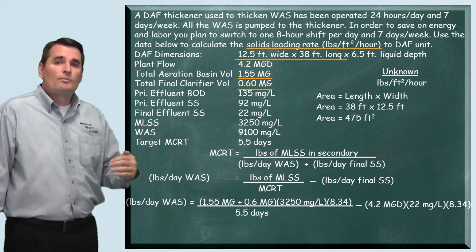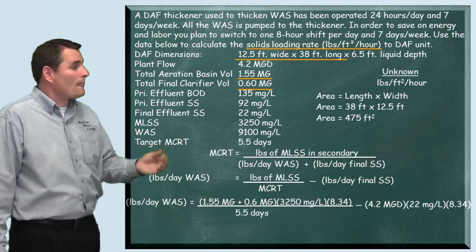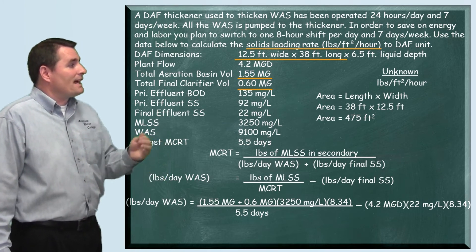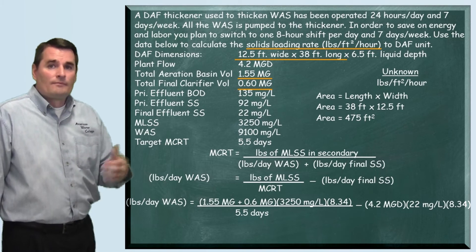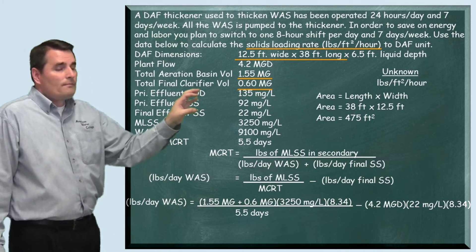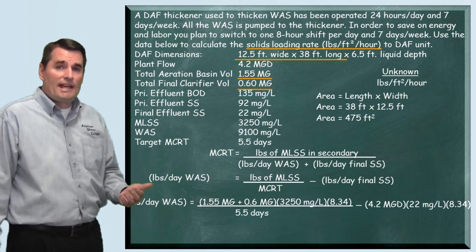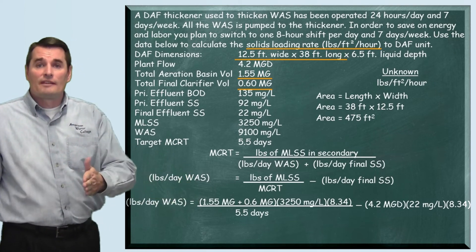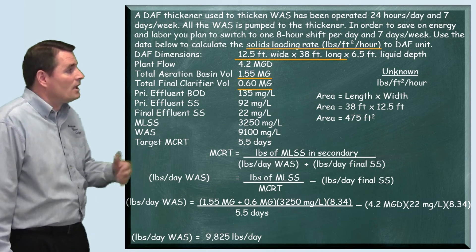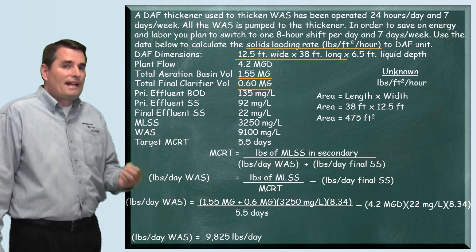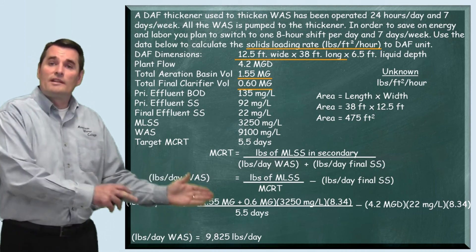Then we subtract out the pounds per day leaving over the final weir, using the plant flow of 4.2 MGD times the effluent suspended solids concentration of 22 mg/L times 8.34. Once we do this math and calculate it out, we get 9,825 pounds per day of waste activated sludge going to the thickener — because the problem told us all of the waste activated sludge is going to the thickener.